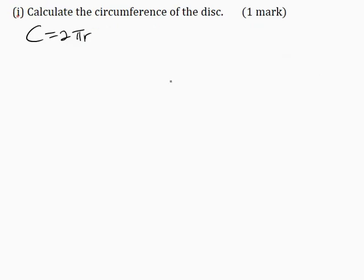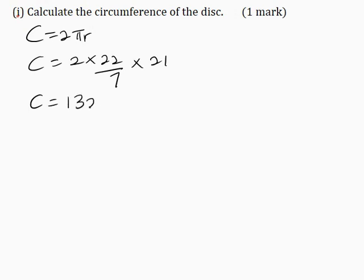Substituting into the formula: circumference equals 2 multiplied by 22 over 7, multiplied by 21. Multiplying this out gives a circumference of 132 mm.